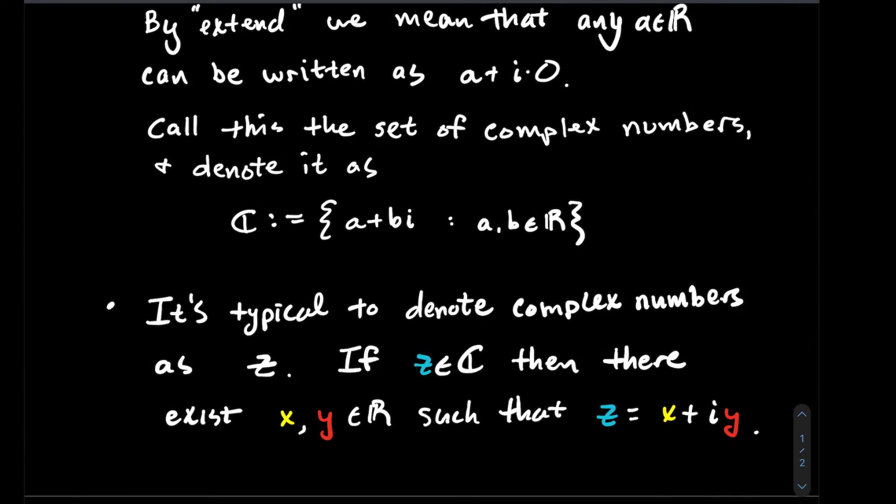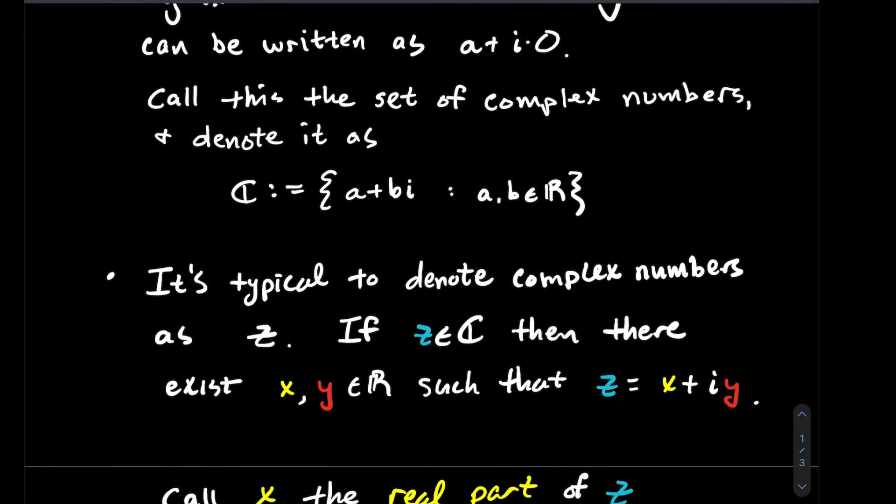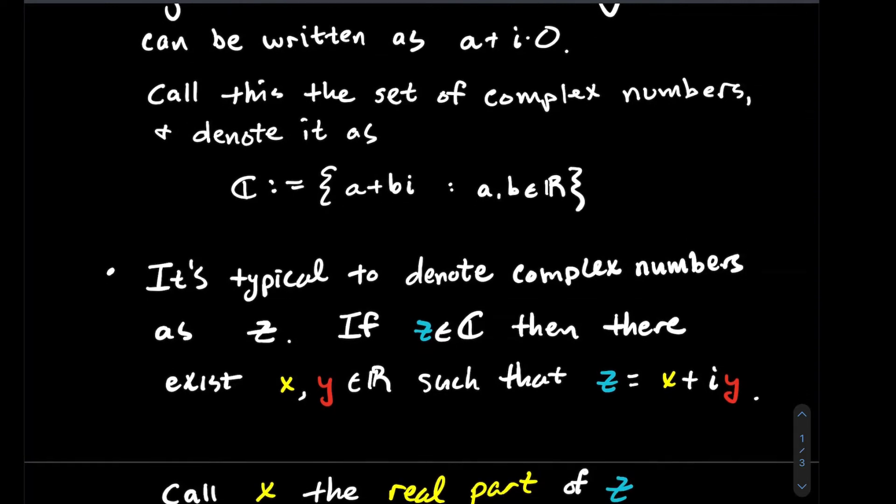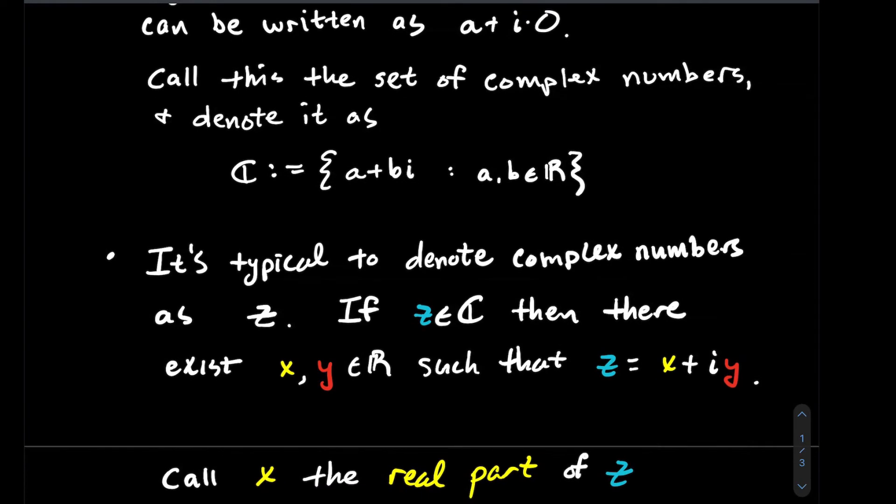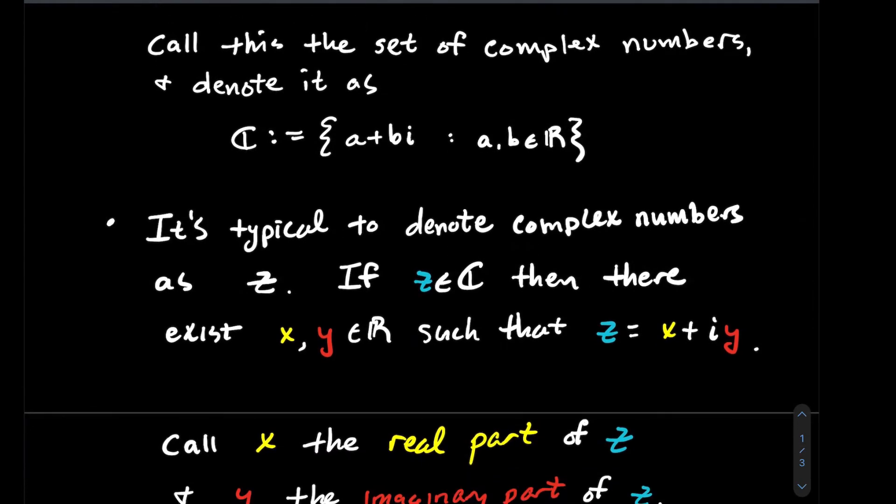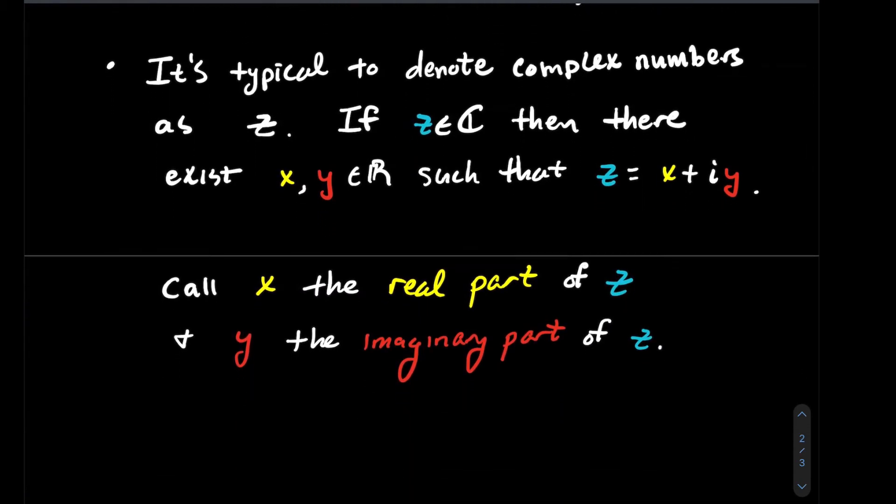Let's name these components x and y. We'll call x the real part of the complex number z, the part that doesn't have an i, and we'll call y the imaginary part of z.